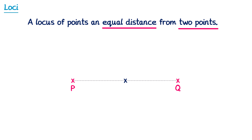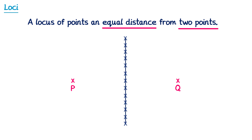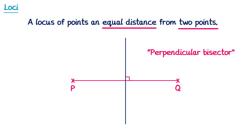If we take that middle point and raise or lower it slightly, it's still the same distance to P as it is to Q. In fact, any of these points are also the same distance, so the locus forms a straight line. If we connect P and Q, these two lines form a right angle — you may recognise this from the previous video as a perpendicular bisector. So constructing the locus of points equidistant from two points means constructing the perpendicular bisector of the line connecting them.